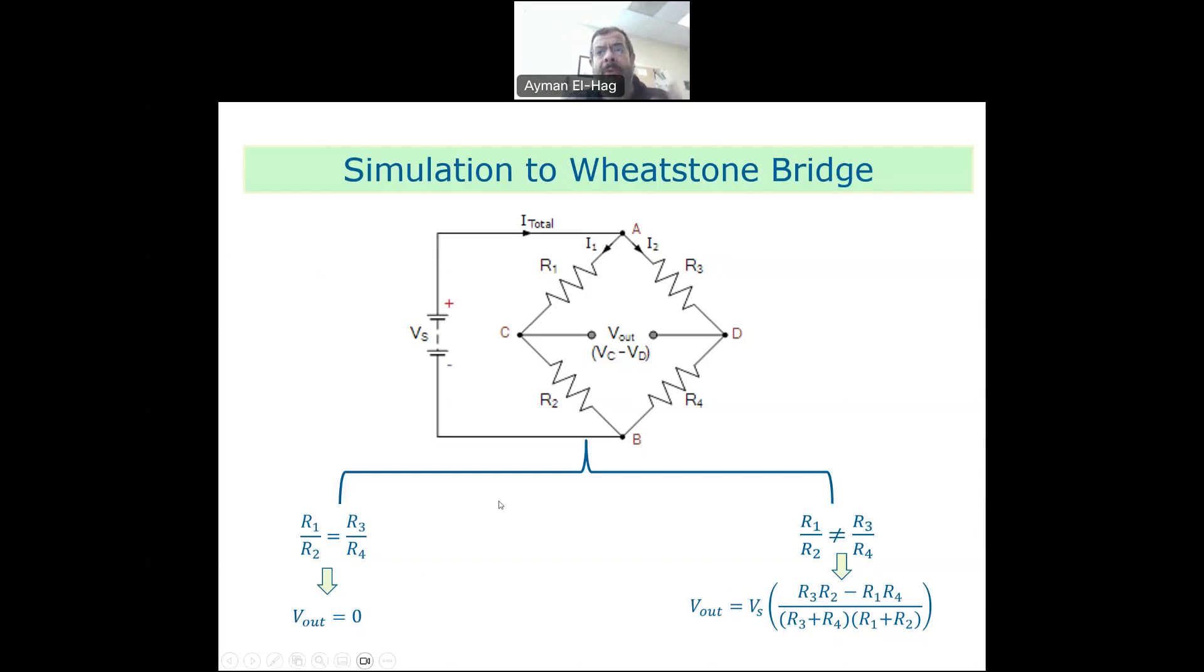Now, how do these formulas come from? Why, when we have this condition, Vout equals zero, and when the condition doesn't satisfy, Vout equals this? I will leave in the description the derivation videos for those formulas, plus I will also leave a couple of experiments for the Wheatstone Bridge.